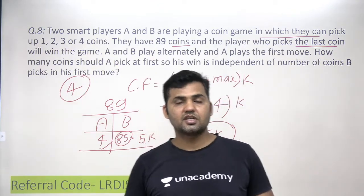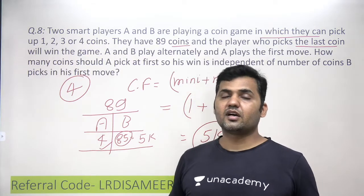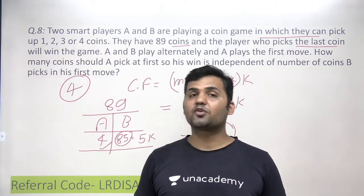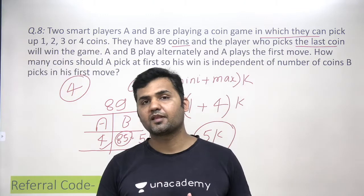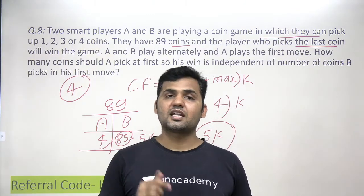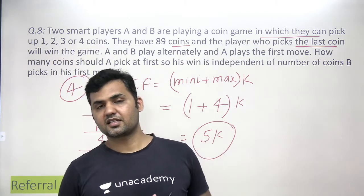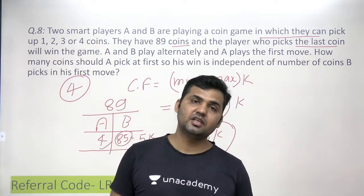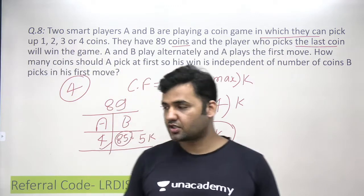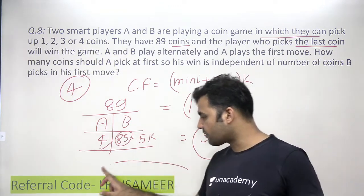We have now done eight questions. There are some cases where whatever number of coins A picks, it is not possible for A to win the game even if A is starting. Those cases fall under category three, which will be discussed in the next video.